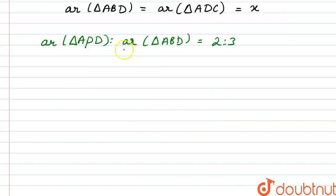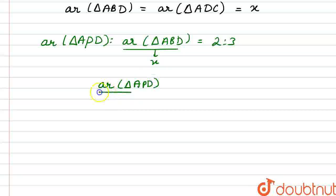We're given 2:3. But we initially assumed that area of triangle ABD is X. So we can write area of triangle ADP upon X equals 2/3. And from here, we can find area of triangle ADP, which will be equal to 2/3 times X. So we have equation 1.